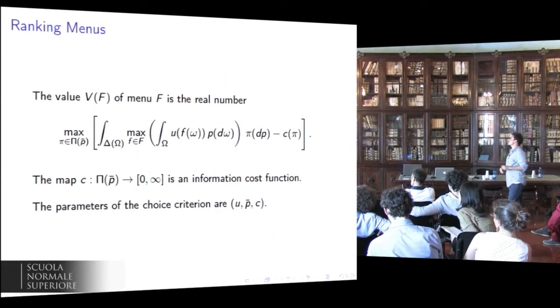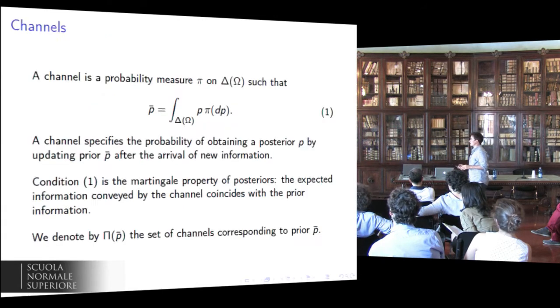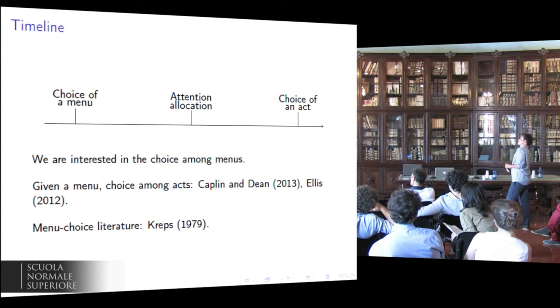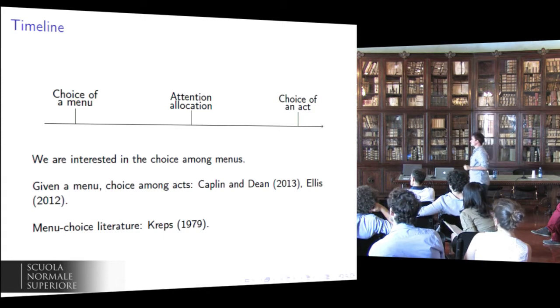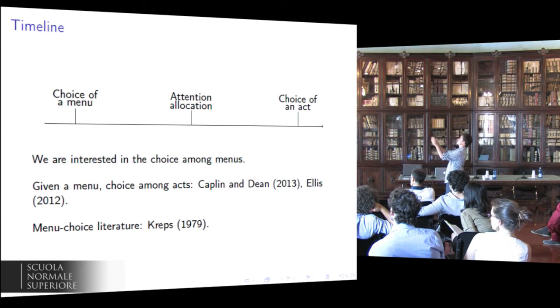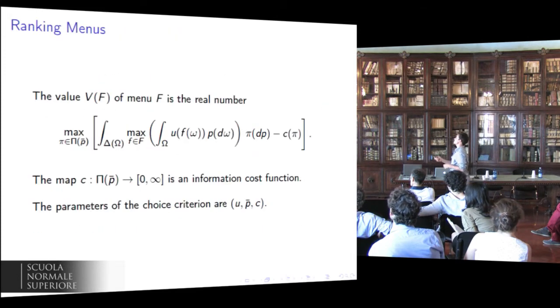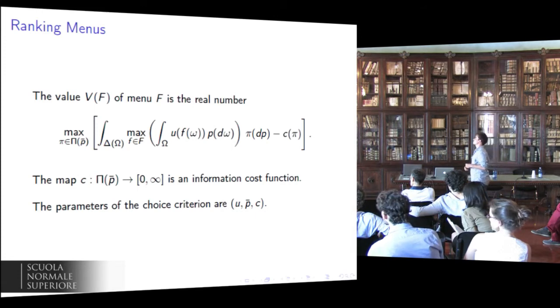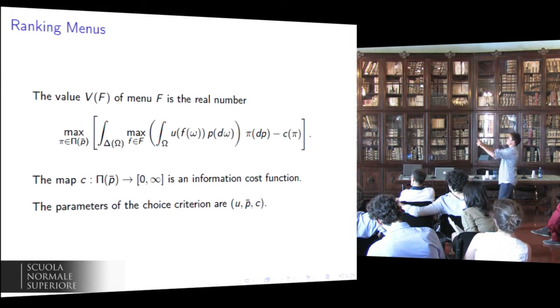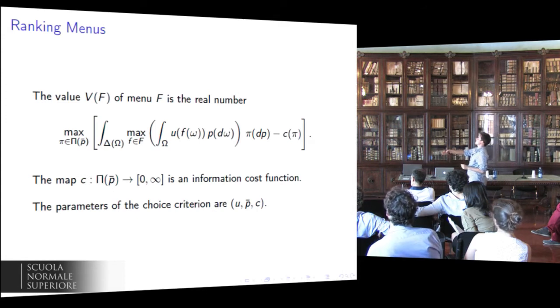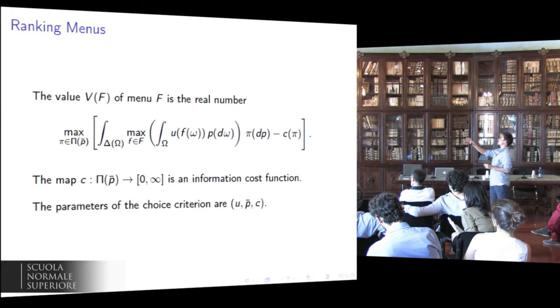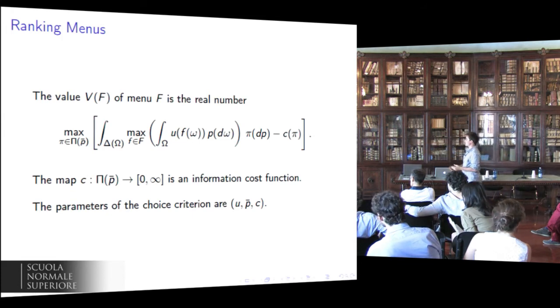This expression can be seen as the result of a two-stage optimization problem. Recall that we have given a menu, we have attention allocation, and then a choice of an act. The first stage of the optimization problem is the allocation of attention, and the second stage is the choice of an act. Proceeding backwardly, the objective of the second stage is between round brackets, and it is to maximize expected utility for any given posterior by optimally choosing an act from the menu F.